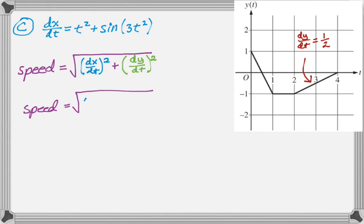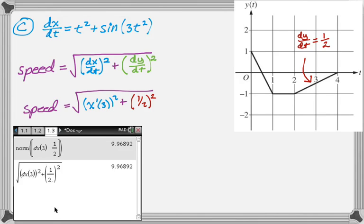So the speed is going to be x prime of 3 squared plus the quantity 1 half squared. And then I use the calculator. I use the calculator two different ways. The first way is I just find the norm of the vector. But if you're not very familiar with doing that, it might take you more time. So it might be faster to just punch in exactly what you're doing.